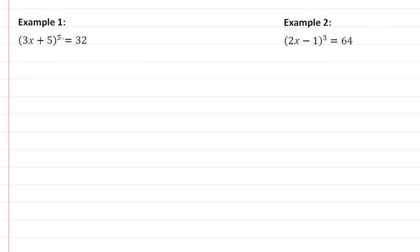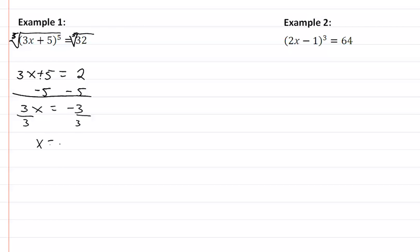So in example one, since we have the fifth power here, we're going to take the fifth root. The 5's are kind of hard to see, but that will give us 3x plus 5 equal to 2. We'll subtract 5 from both sides. We now have 3x equal to negative 3, divide by 3, and x is going to equal negative 1.